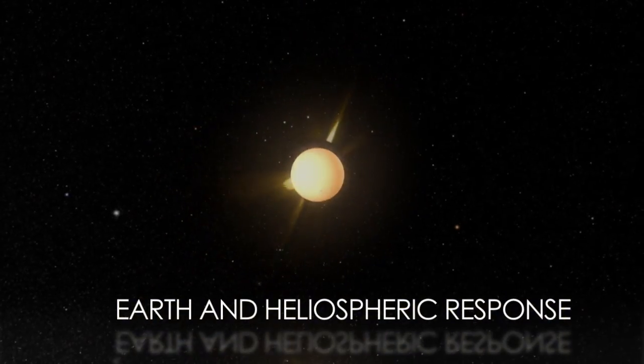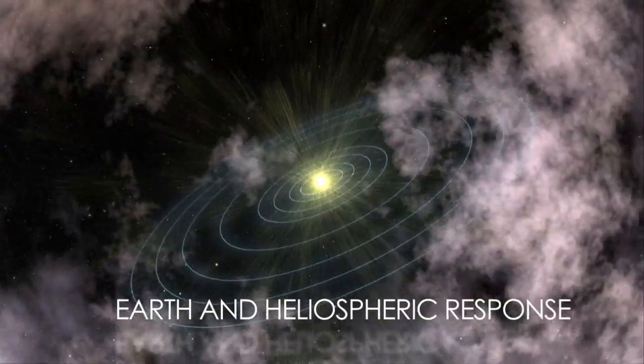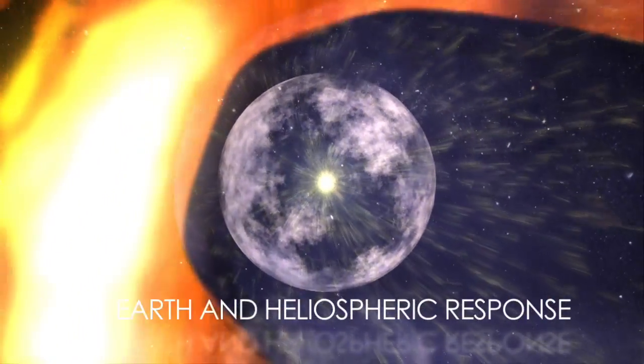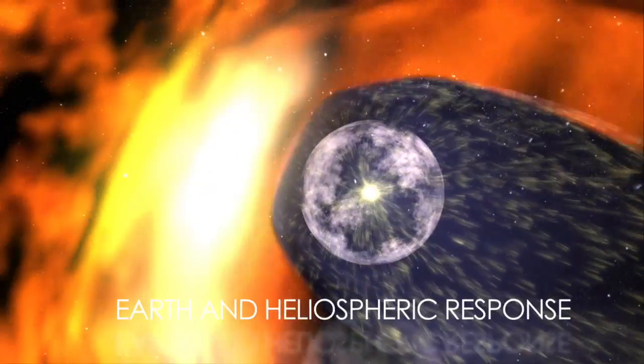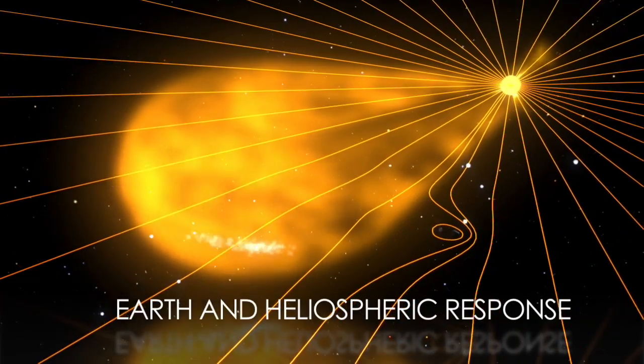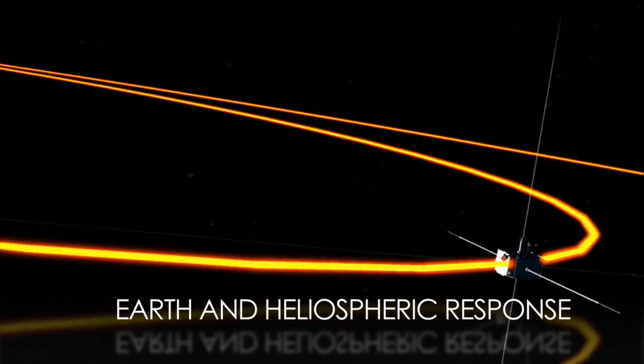Just as we need to understand the Sun, we also need to understand how the Earth and solar system react to it. Current and future missions will reveal how the edge of the Sun's influence interacts with the greater universe. Others study how objects in the solar system, such as comets, are affected by the Sun. Still more study how the Earth's magnetic field reacts to the Sun's activity.